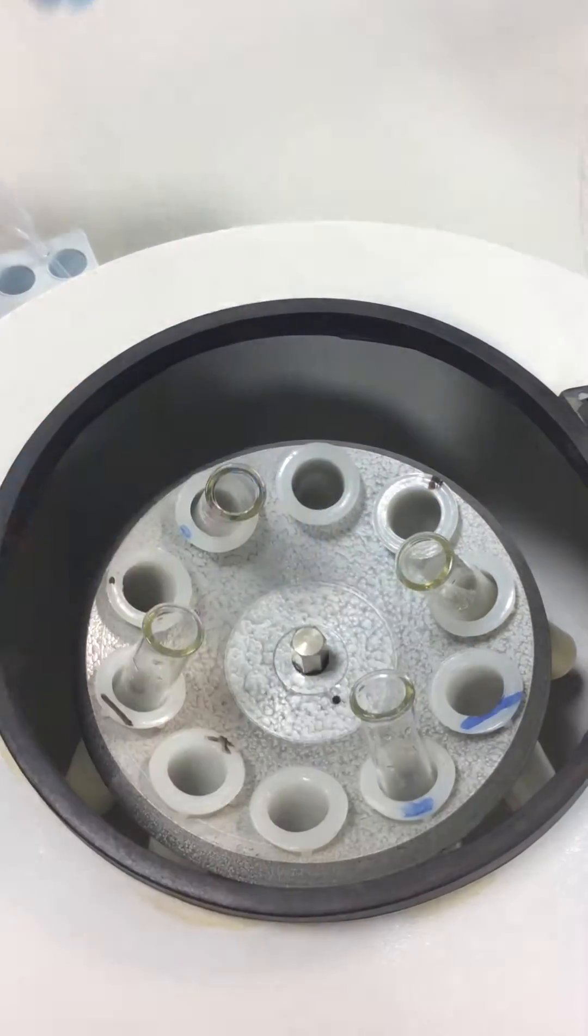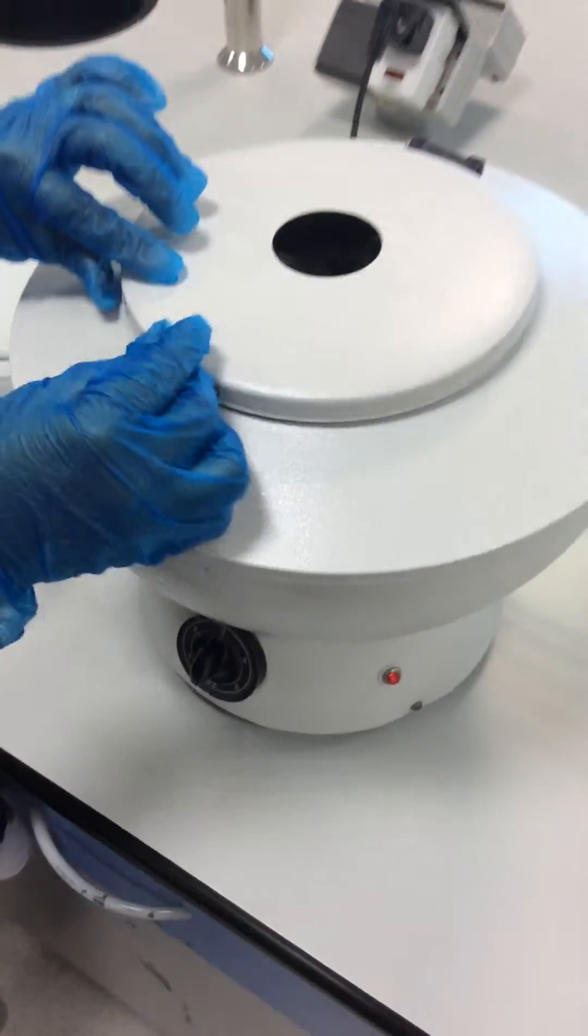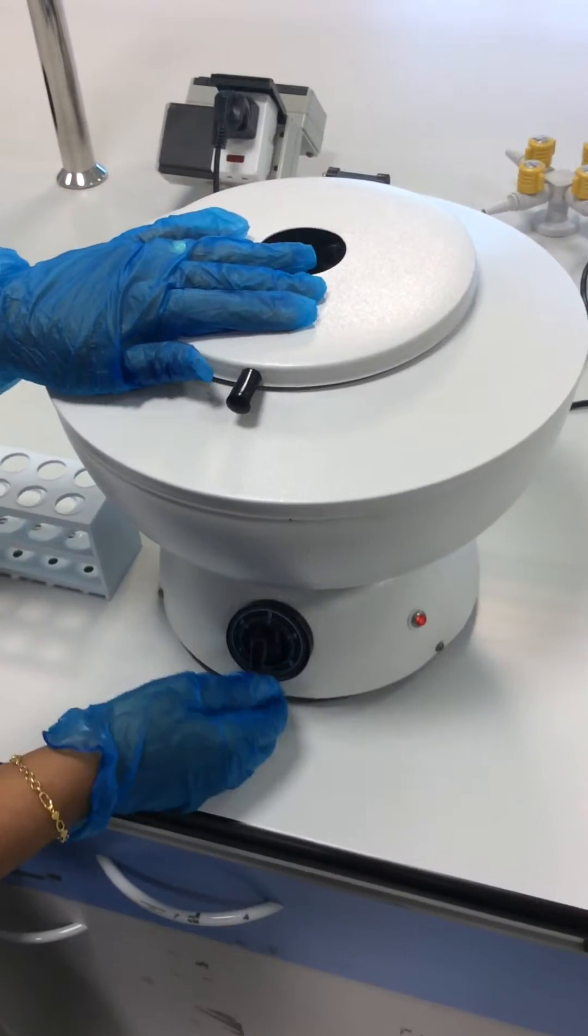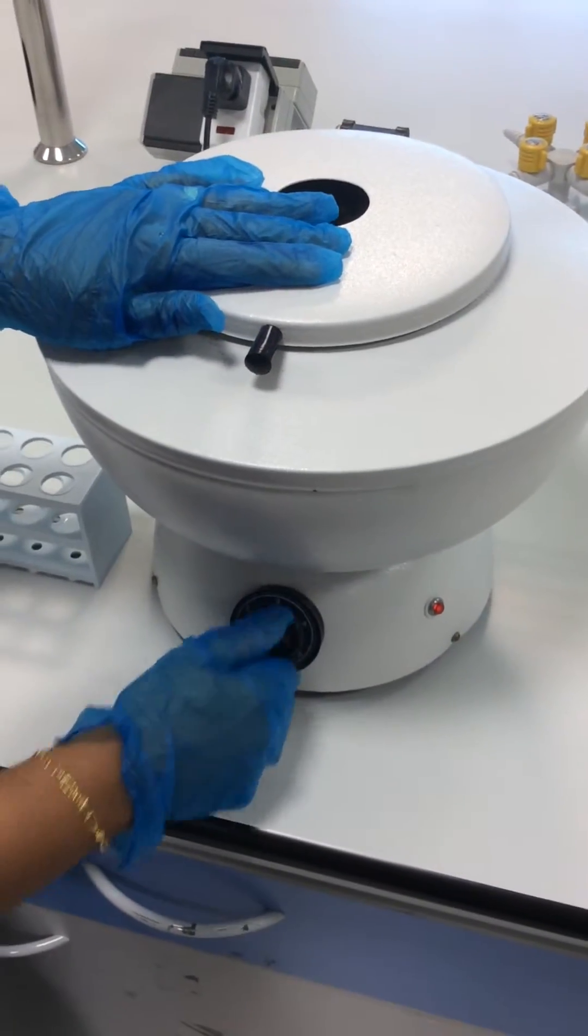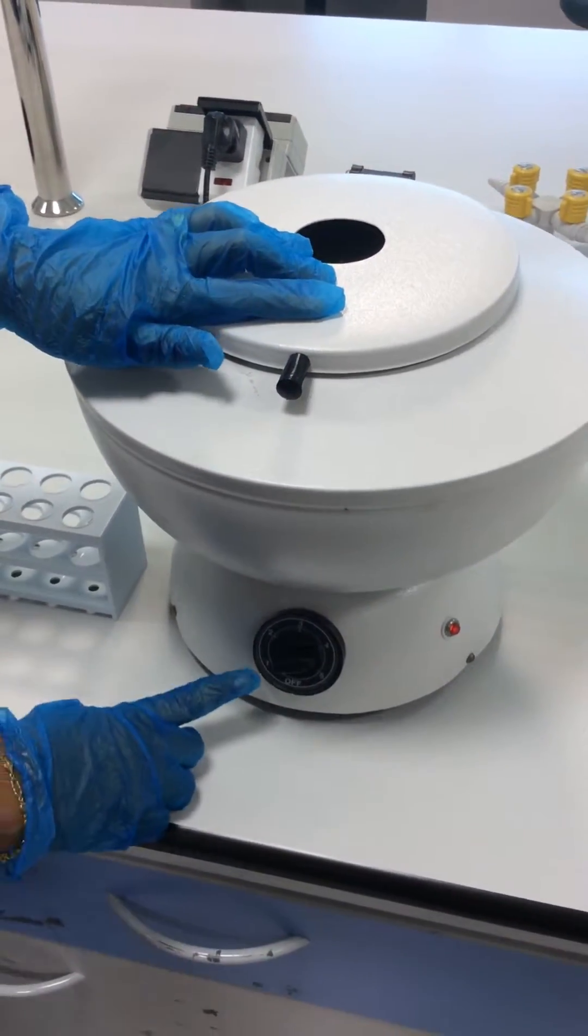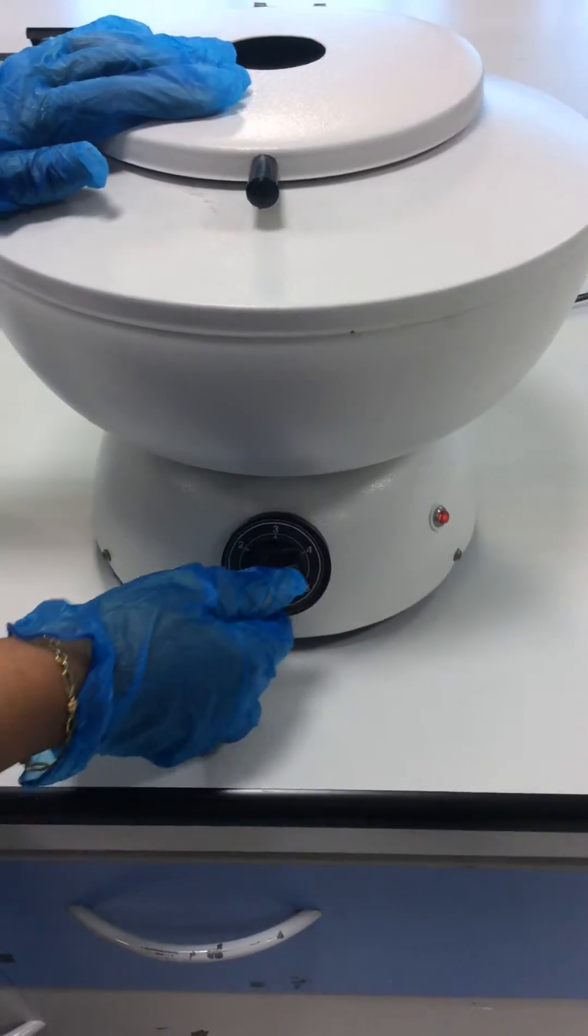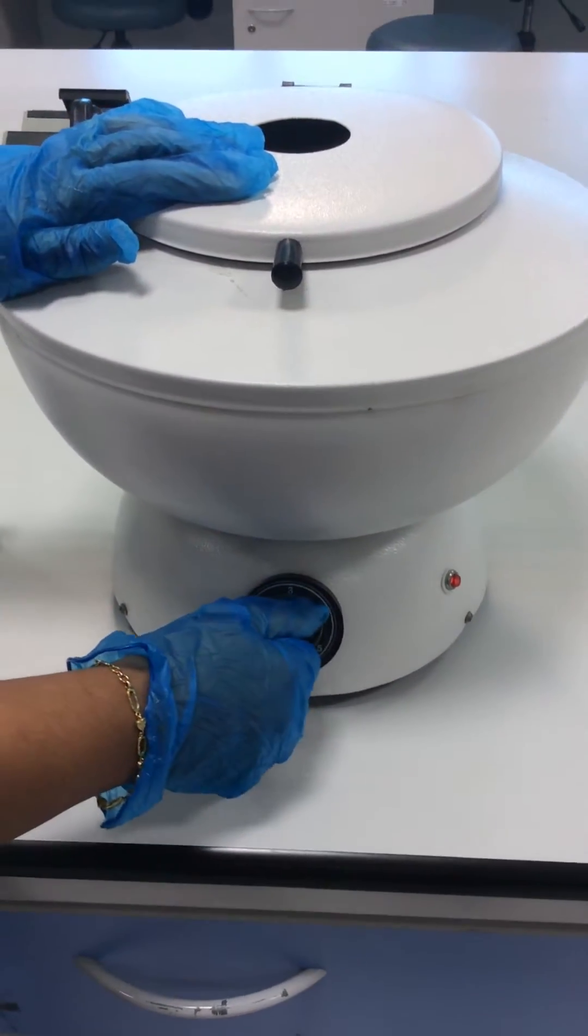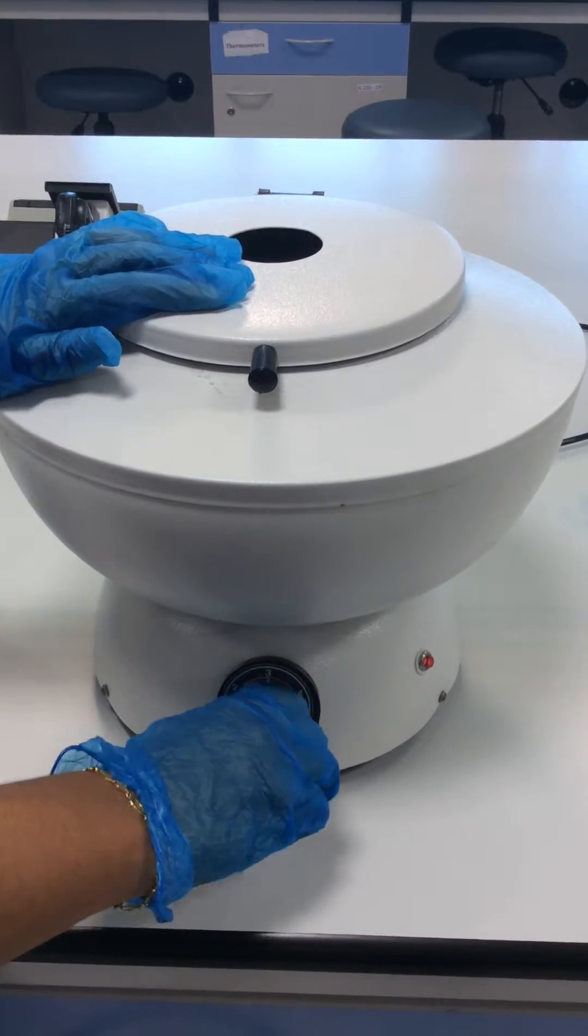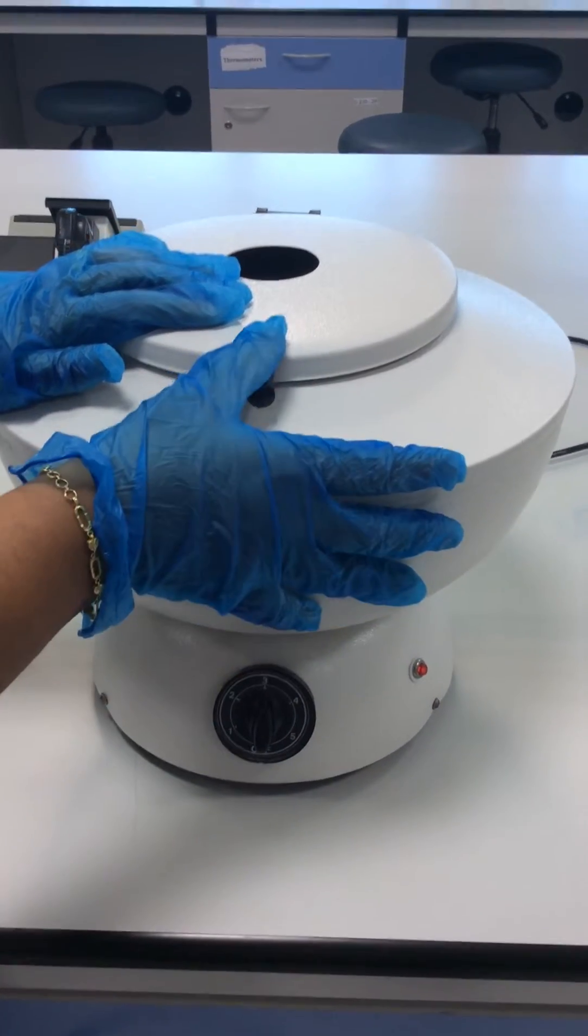I will close the lid of the centrifuge and then turn it on. I start at speed 1 and then slowly increase the speed up to 5.